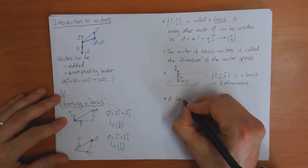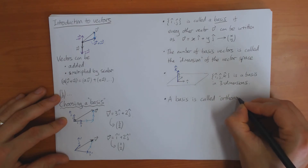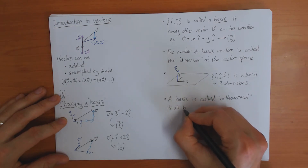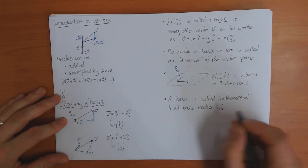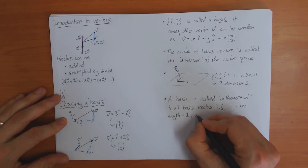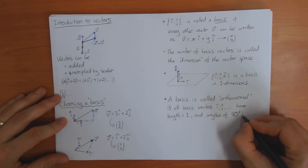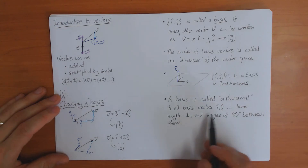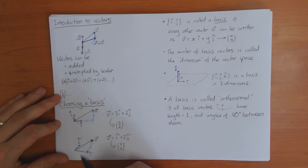A basis is called orthonormal if all basis vectors — i, j, and more in higher dimensions — have length equal to one, and the angles between them are 90 degrees. With this definition, the first basis here is an orthonormal basis, but the second basis is not an orthonormal basis.